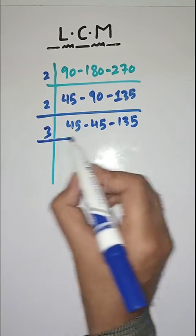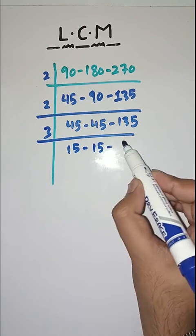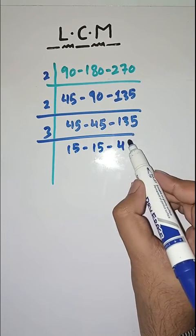Now with 3. Dividing 45, 45, and 135 by 3, we get 15, 15, and 45.